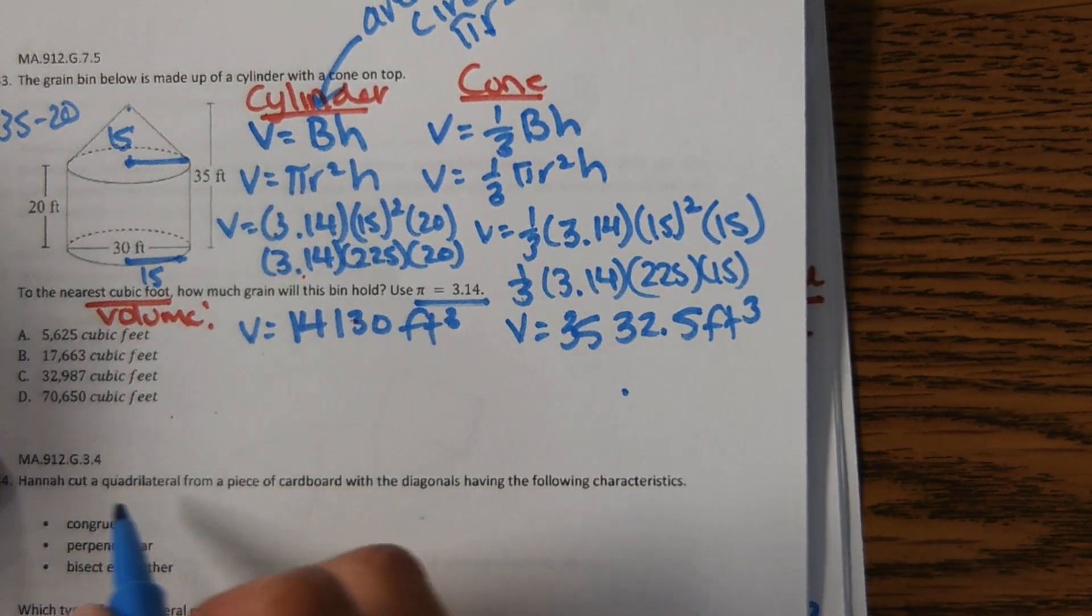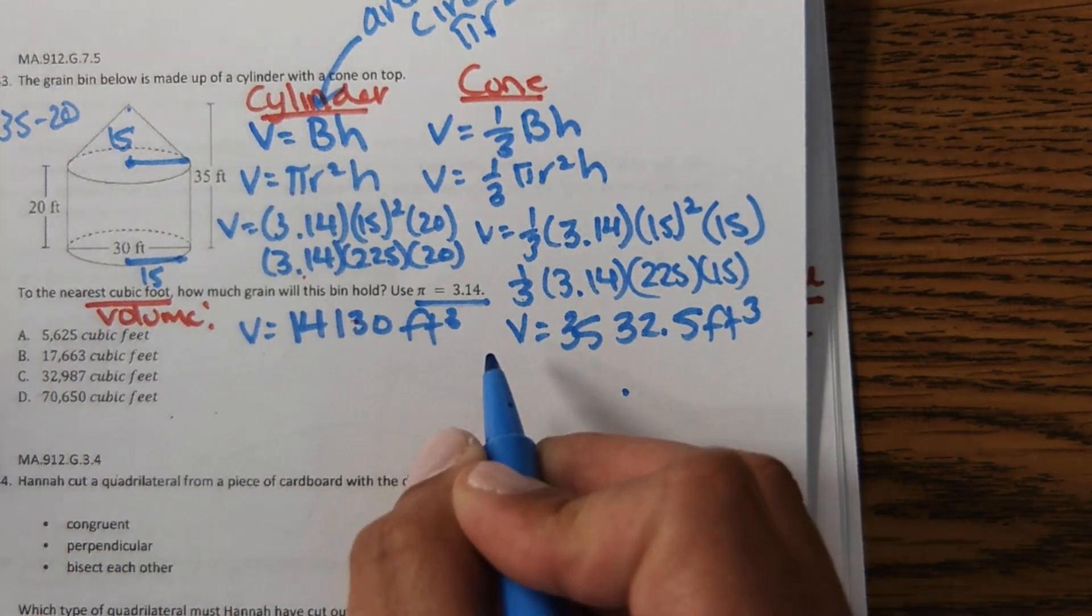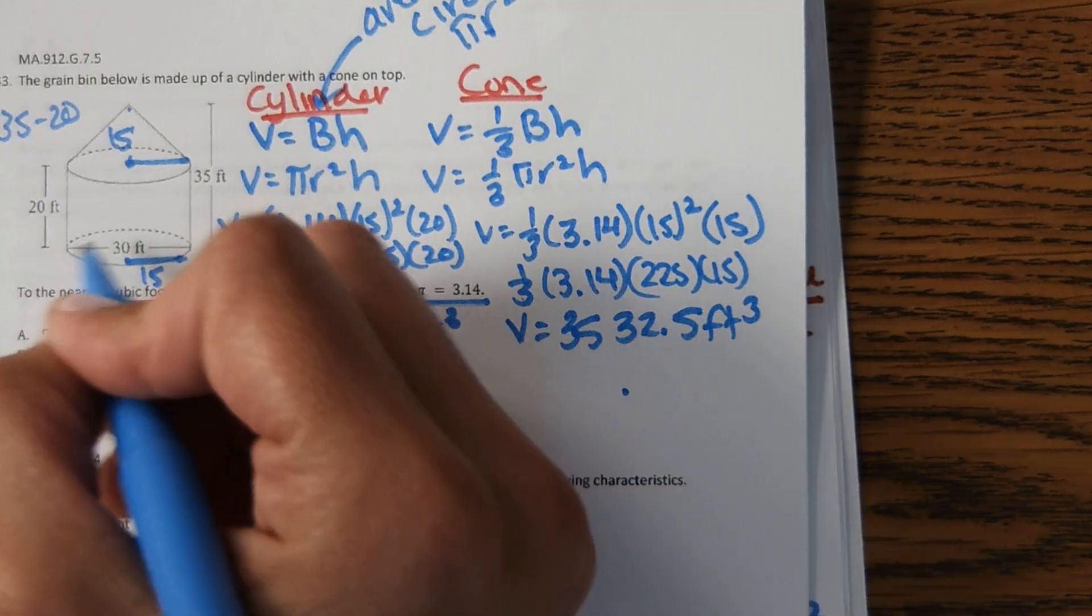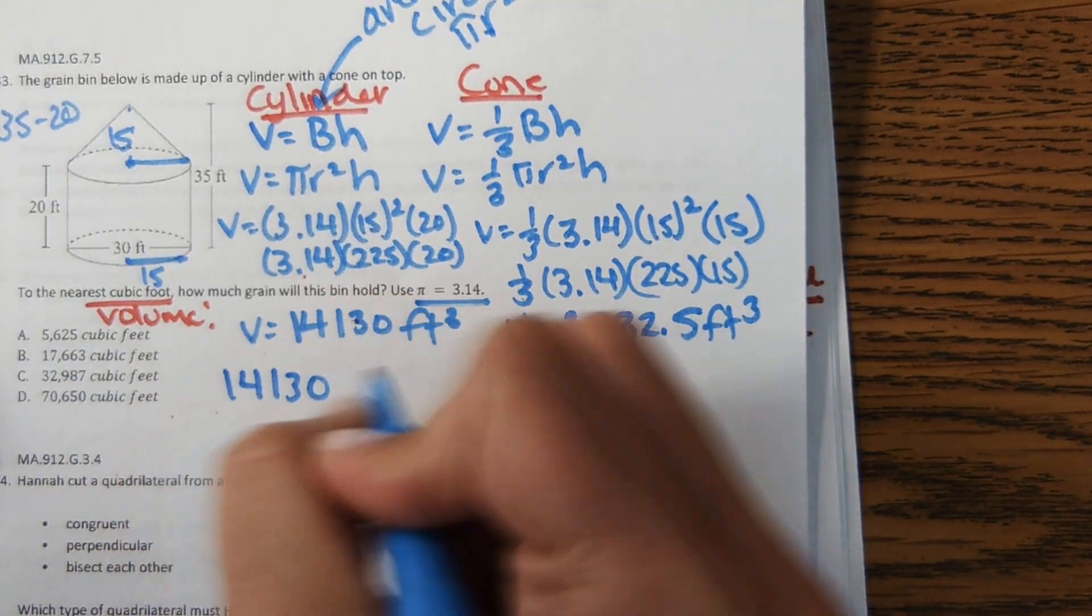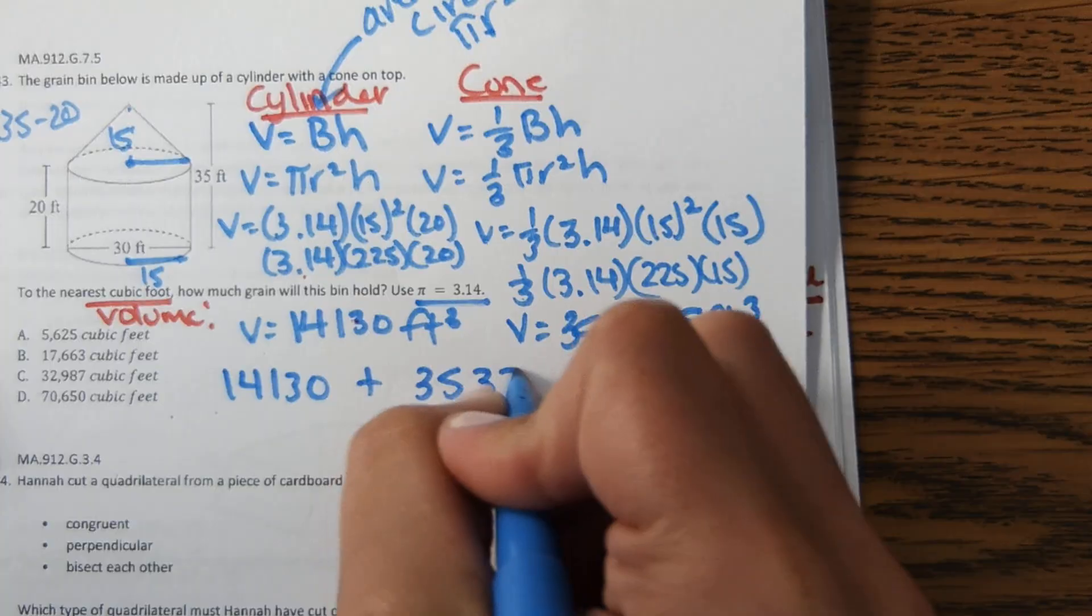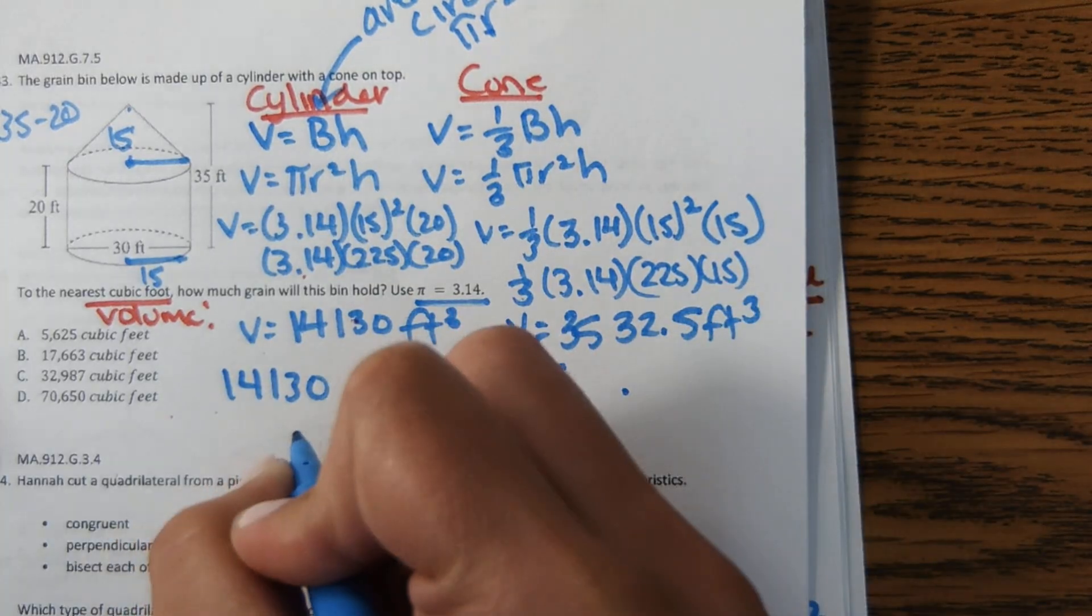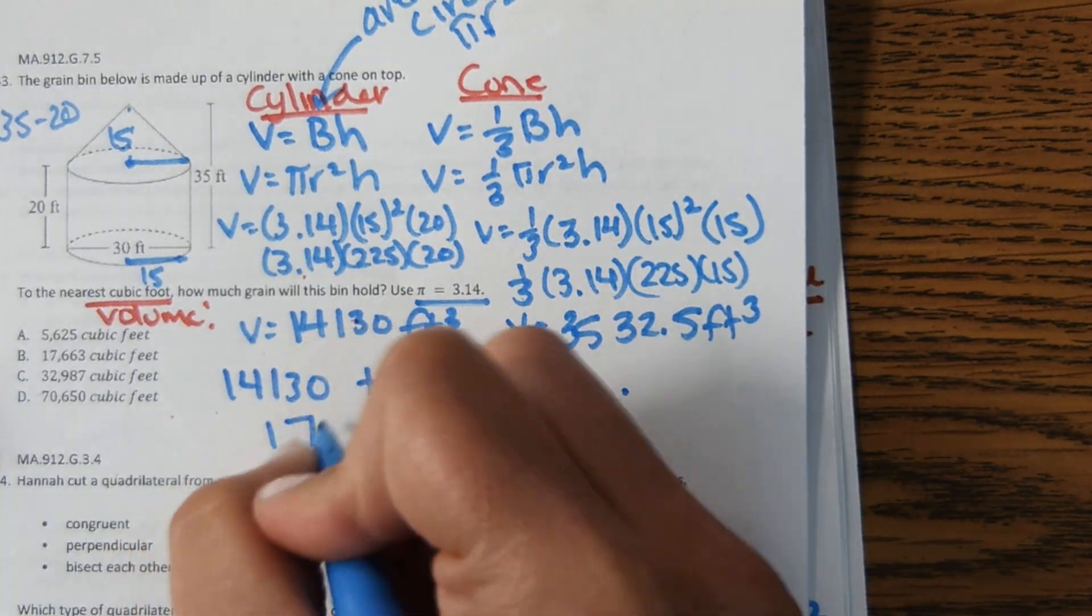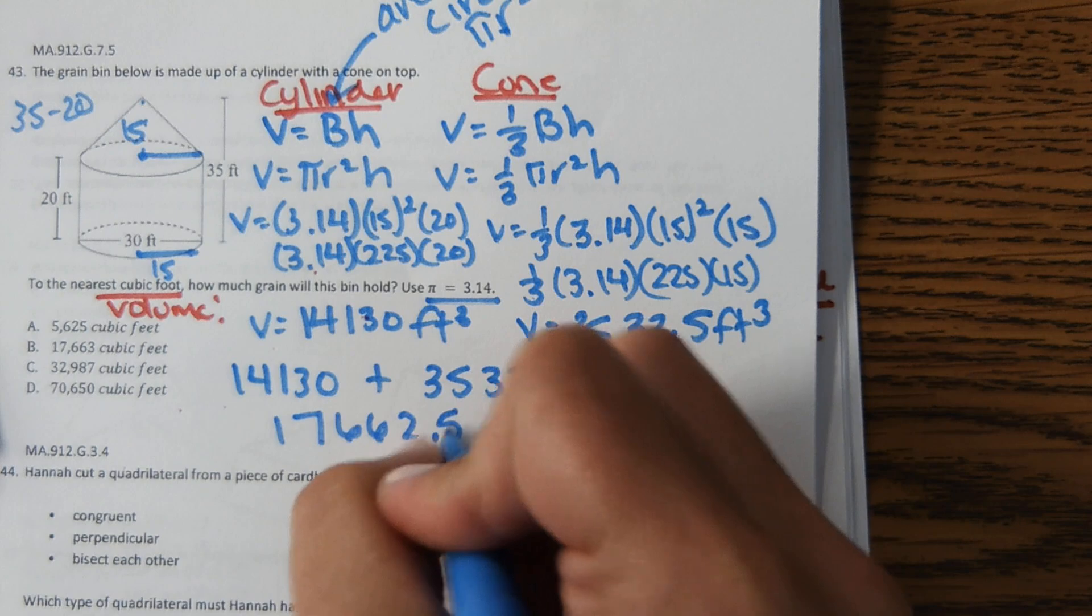And then the next step once you have the volume of each of these is to add those volumes together. So you add this plus this. And that comes out to 17,662.5 feet cubed.